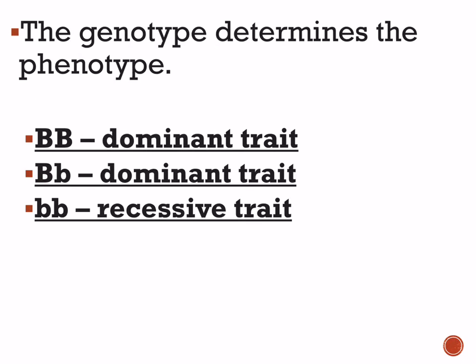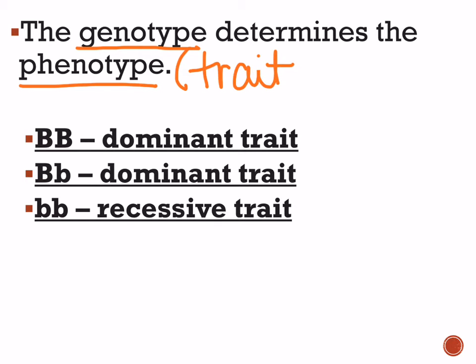Whatever genotype an individual has, it determines the phenotype — the trait that shows. If you are homozygous dominant, you show the dominant trait. If you are heterozygous, you also show the dominant trait, because the recessive lowercase allele is hiding. The only time you see the recessive trait is with a homozygous recessive genotype.